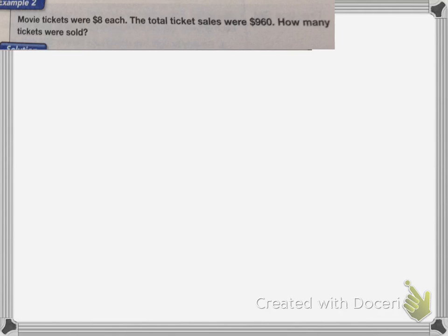So here, movie tickets were $8 each. The total ticket sales were $960. How many tickets were sold? So with equal groups, I end up with the number of groups times the number in each group, which equals my total.